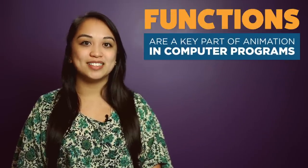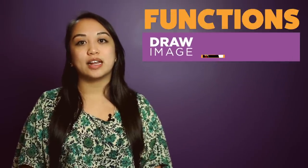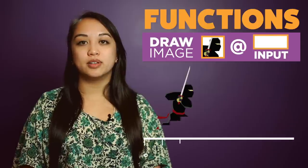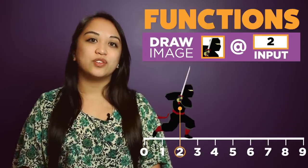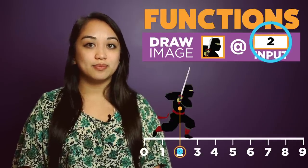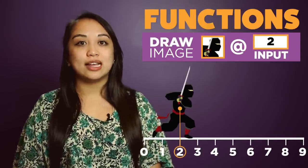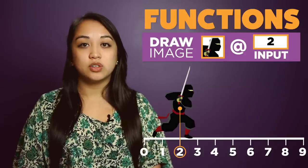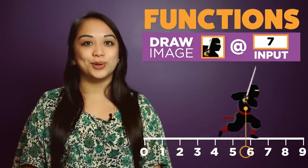Functions are a key part of animation in computer programs. A function that draws a static picture of your danger, for example, can place the sprite at a different location based on the input. When that input changes slightly based on time or user interaction, the sprite will appear to move.